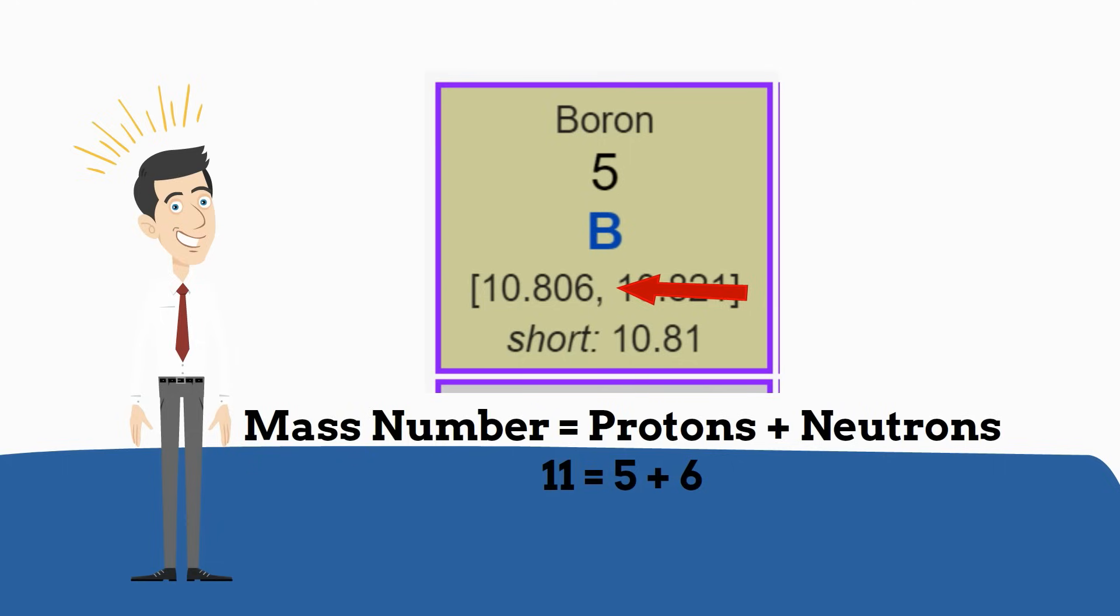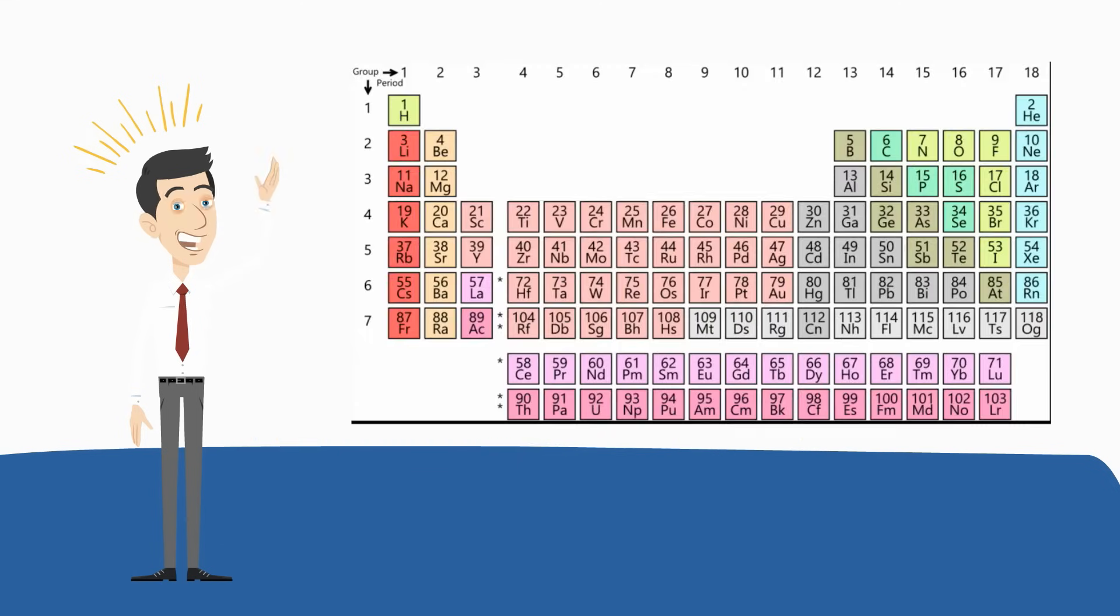It is a metalloid based on its color. It is a solid and it is in family 13, so I know it has 3 electrons in its outer shell.